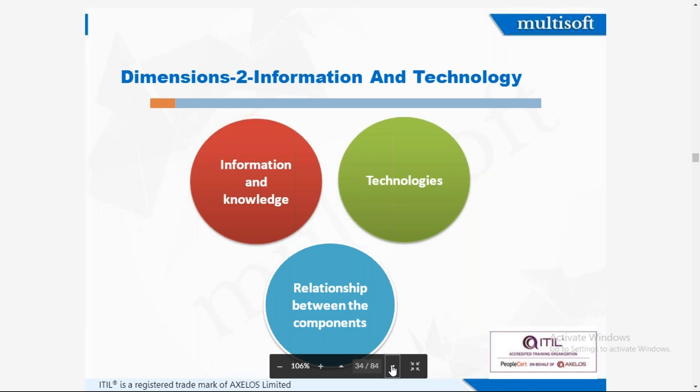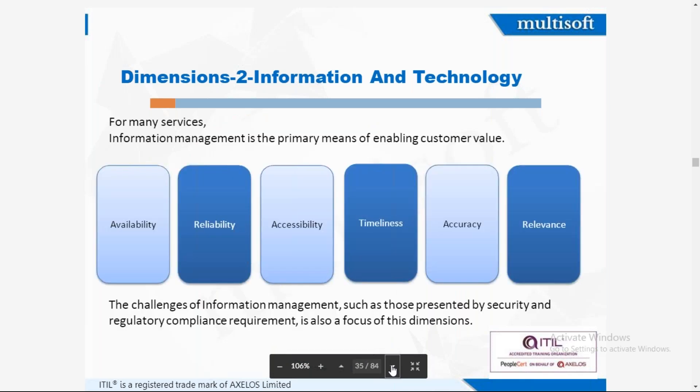The second dimension is information and technology. This means you should be well-versed with the information, knowledge, and technology running in the company to provide the service, and the sound relationship between the components. For many services, information management is a primary means of enabling customer value. The broadband should be available, reliable, accessible, timely, accurate, and relevant. Any challenges or issues should be investigated and resolved.